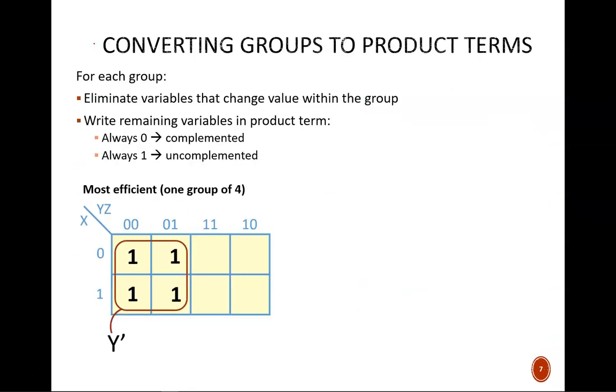After identifying groups, we write the product terms associated with that group. For each group on a K-map, look at the inputs to all of the squares in that group. For any input variables that change values, do not include them in the product term. For any input variables that hold a constant value throughout the group, do include them. If that variable equals 0, then write it complemented. If that variable equals 1, then write it without the complement. Let's apply that to our ongoing example.